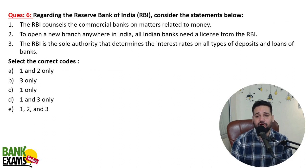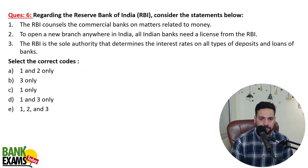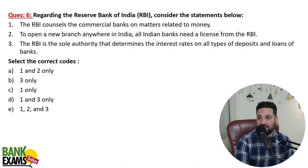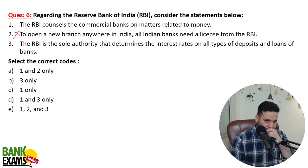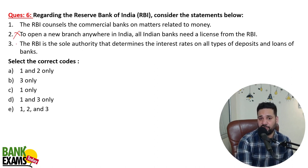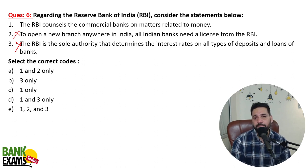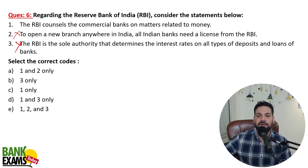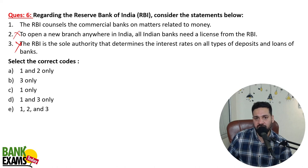Regarding the RBI, consider the following statements. First: RBI counsels commercial banks on matters related to money — that is correct. Second: to open new branches anywhere in India, all Indian banks need a license from RBI — that is incorrect; banks can open branches without needing a license from the RBI. Third: RBI is the sole authority that determines the interest rate — that is false; RBI sets the bank rate, but banks have autonomy to set their own interest rates, as you can see from SBI and HDFC having different rates. Only the first statement is correct.